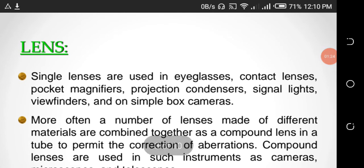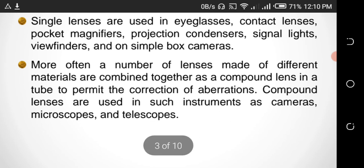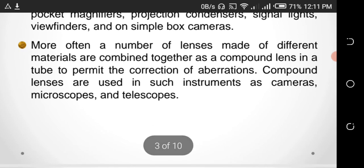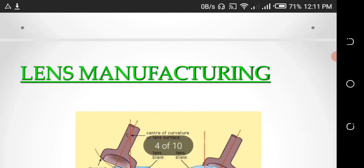Single lenses are used in eyeglasses, contact lenses, pocket magnifiers, projection condensers, signal lights, viewfinders, and on simple box cameras. More often, a number of lenses made of different materials are combined together as a compound lens in a tube to permit the correction of aberrations. Compound lenses are used in such instruments as cameras, microscopes, and telescopes.